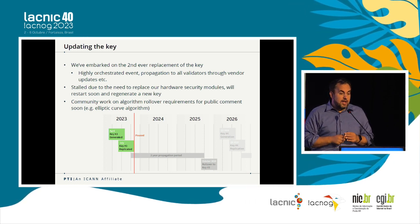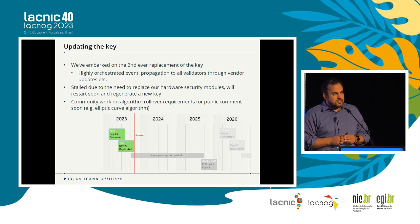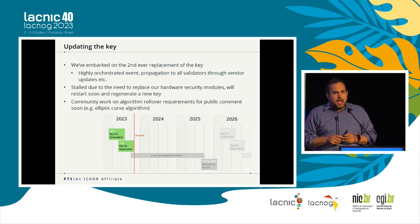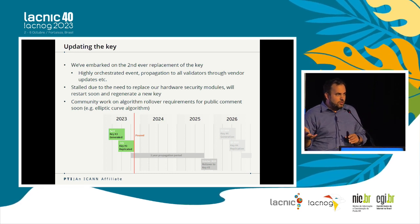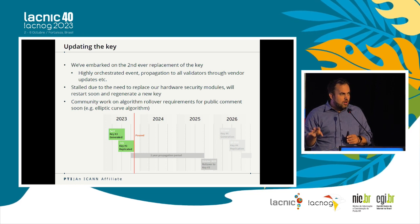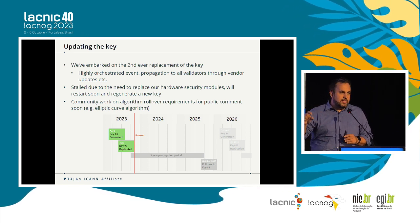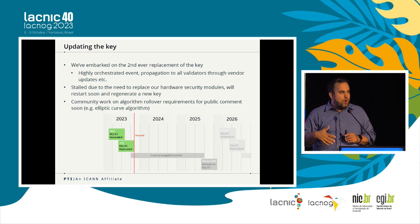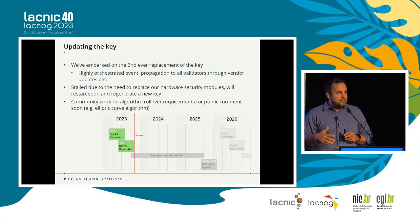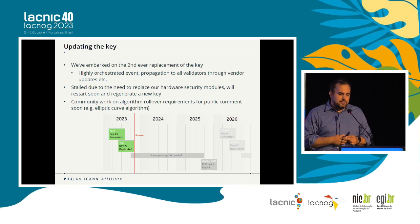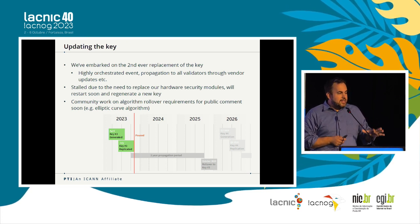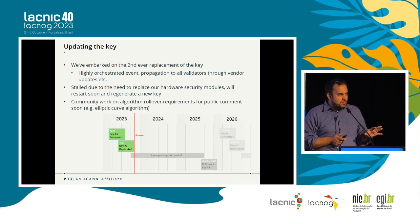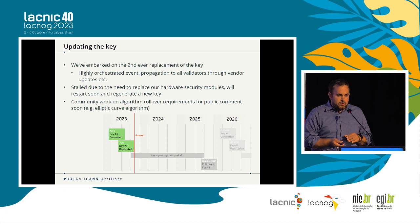We currently use RSA SHA-256 as the cryptographic algorithm for the root zone. The root zone algorithm has never been changed, but we recognize we need agility to change it in the future if necessary. There is currently active community work on deciding the parameters under which the algorithm would be changed. This community design team is creating recommendations on how to evaluate whether an algorithm change should be done, and if decided, how it should be conducted. Because it's never happened before and it's very critical infrastructure, we're taking the time to get all the analysis and research done for a bulletproof implementation.